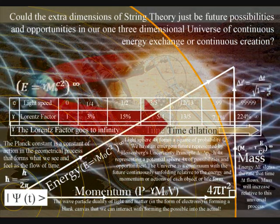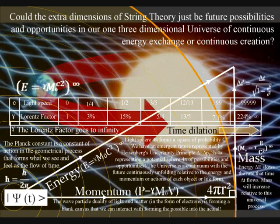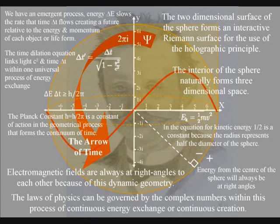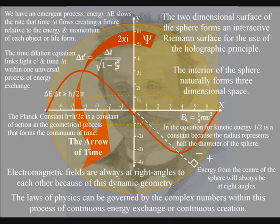In the mathematics of Everett's many worlds theory, the parallel universes or extra dimensions are at right angles to each other. In this theory, as a process of spherical symmetry forming and breaking, the mathematics can represent the surface of a sphere always being at right angles to the center of the sphere as a process of continuous energy exchange. This can be seen in our everyday life with electromagnetic fields always being at right angles to each other.